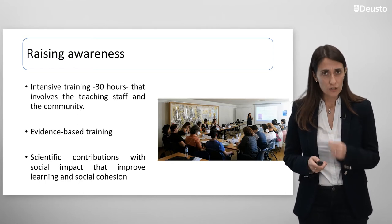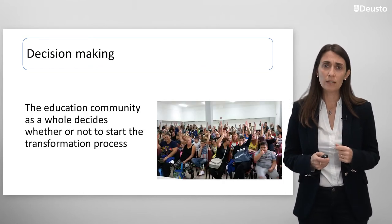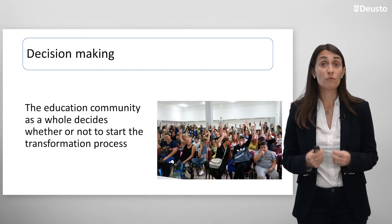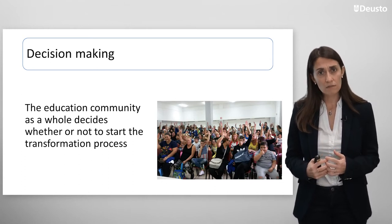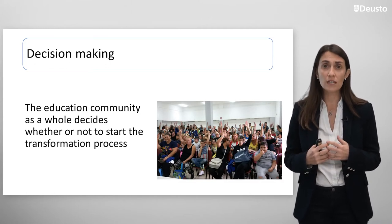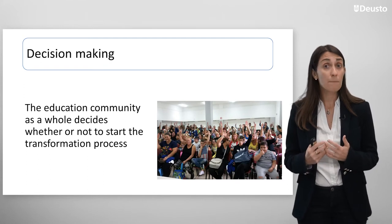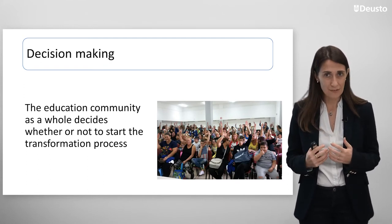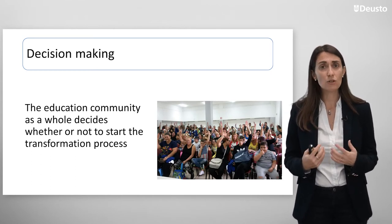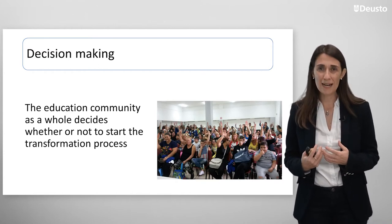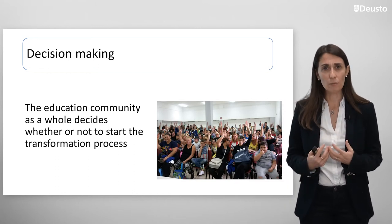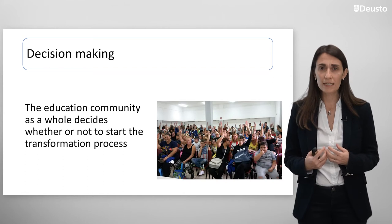Once the school has gone through this training, a decision must be made — the second phase: decision-making. The teaching staff needs to reflect on their decision to take on these principles, theories, and evidence and introduce them into their classrooms and educational practices. But they don't make the decisions by themselves. The entire educational community is involved in this decision and makes the choice to transform, or not, their school into a learning community. To organize that, the schools mobilize the community, invite families, community members, spread the word through word of mouth, send letters.